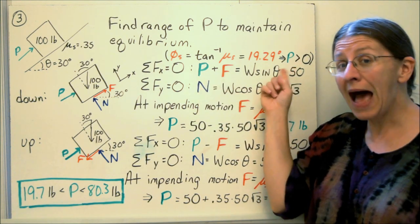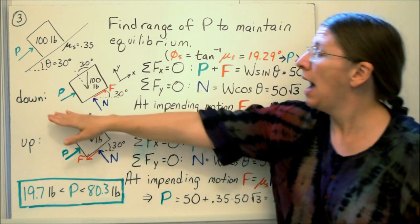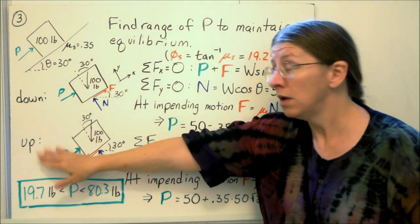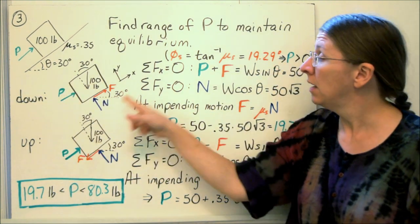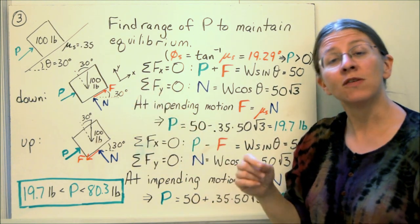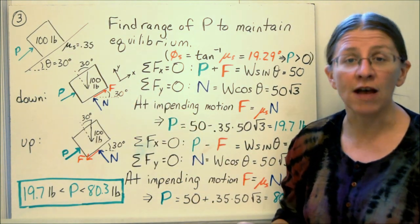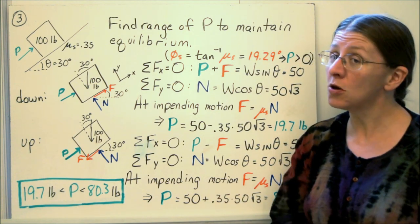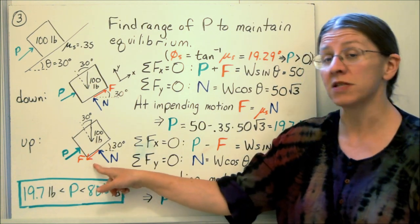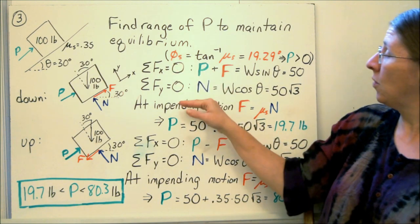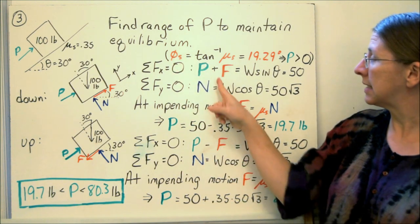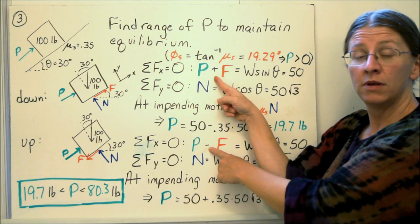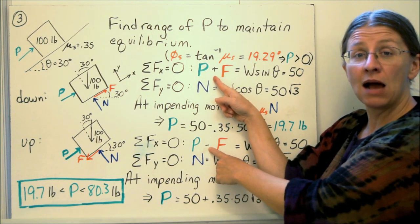Assuming, then, that p is not 0, it's greater than 0, I have two choices. It can move down the slope, or it could move up the slope. Those are the two things that could happen. These are my free body diagrams. They're the same, except for the direction of f. f is either opposing the motion down, which means it's going up, or it's opposing the motion up, in which case f is coming down. Same equations of equilibrium in both cases, except for the sign on f.